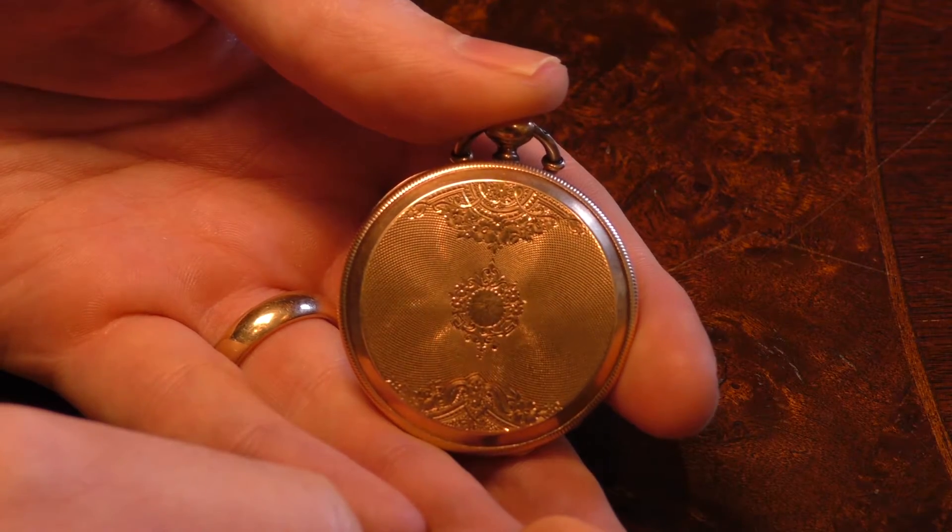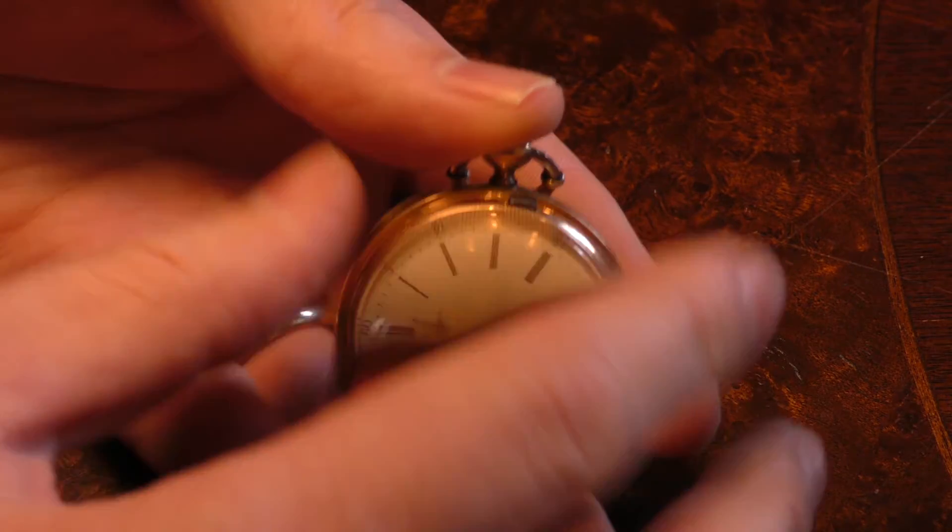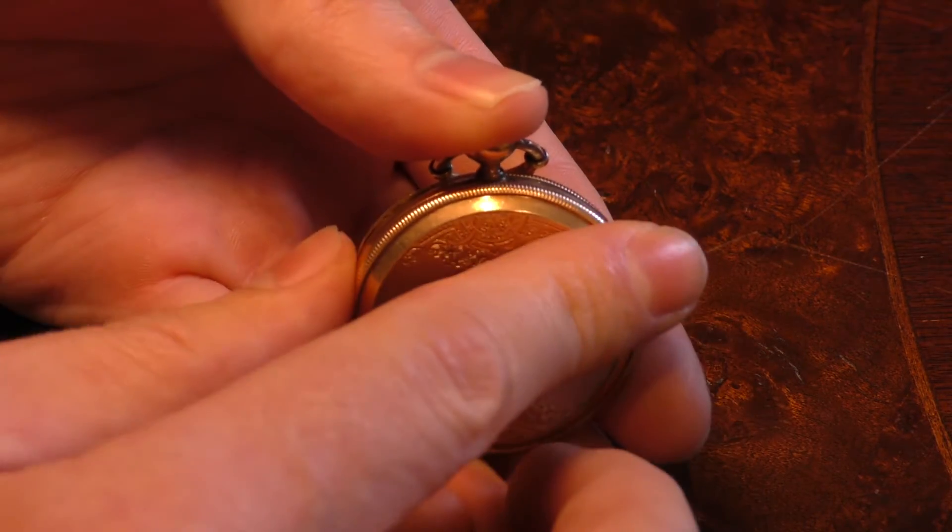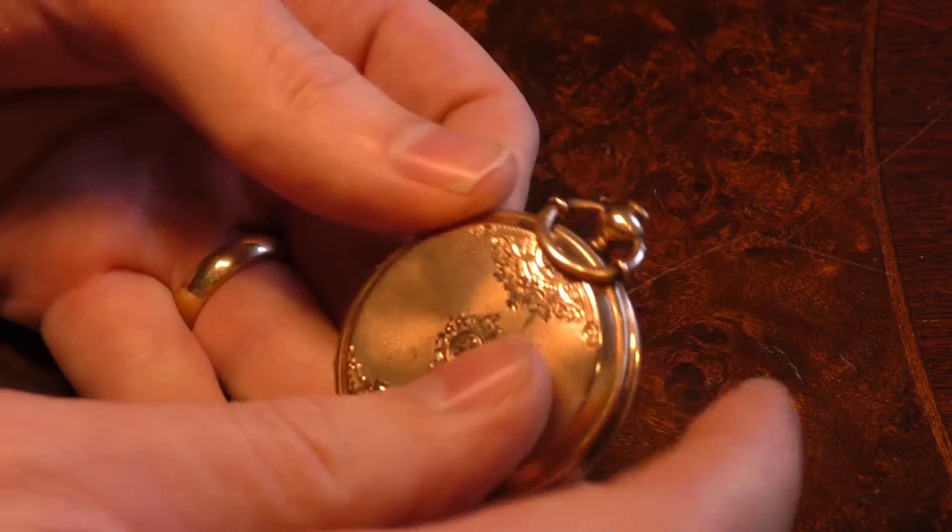Here I'm going to show you how to set and wind a key set, key wind watch. Simple one is you open the watch, always depress the button when you close it. That way you don't wear down the mechanism.